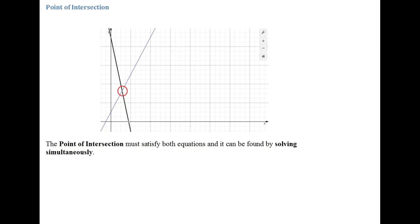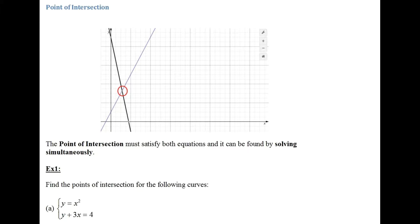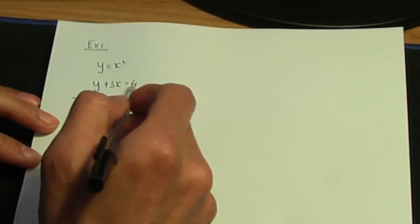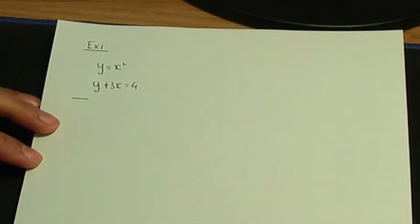Let's go through an example. Example one: find the points of intersection for the following curves. In part a, y is equal to x squared, and the second equation reads y plus 3x is equal to 4. So here are the two equations — y equals x squared and y plus 3x equals 4 — and we need to solve these simultaneously to find the points of intersection.